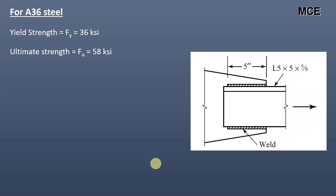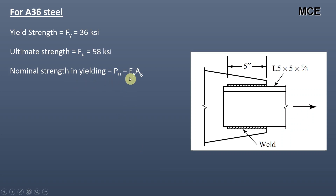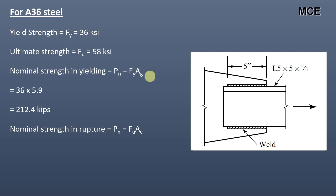The ultimate strength is equal to 58 ksi. The nominal strength in yielding for this angle section is given as yield strength times gross sectional area, which equals 36 times 5.9, which equals 212.4 kips. The nominal strength in rupture is given as ultimate strength times effective area, which equals 58 times 4.17, which equals 241.86 kips.